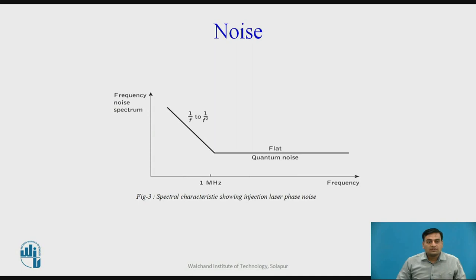Figure 3 shows the spectral density of phase or frequency noise, which has a characteristic represented by 1/f to 1/f² up to a frequency of around one megahertz. At frequencies above one megahertz, the noise spectrum is flat or white. It is associated with quantum fluctuations, which are a principal cause of line width broadening within semiconductor lasers.